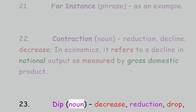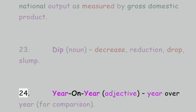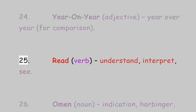23. Dip, noun: decrease, reduction, drop, slump. 24. Year-on-year, adjective: year-over-year, for comparison. 25. Read, verb: understand, interpret, see.